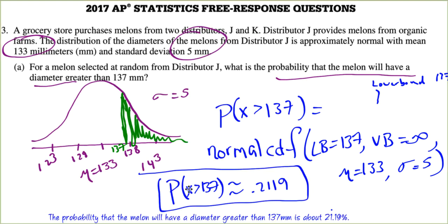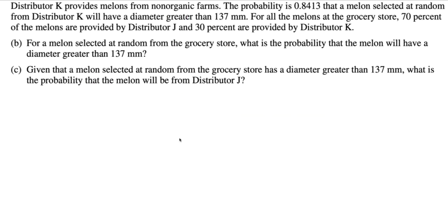So I would clearly indicate what I did here. The probability is 0.2119. And then I make a statement. The probability that the melon will have a diameter greater than 137 millimeters is about 21.19%. That takes care of part A.